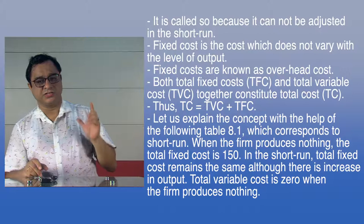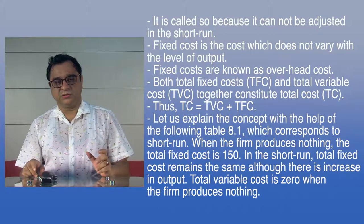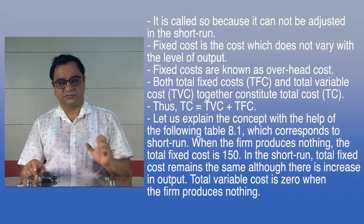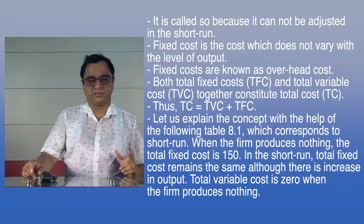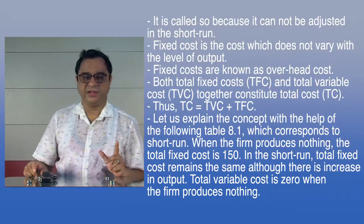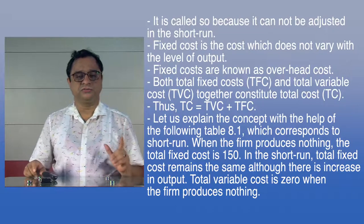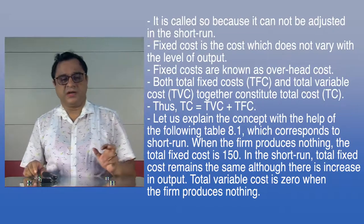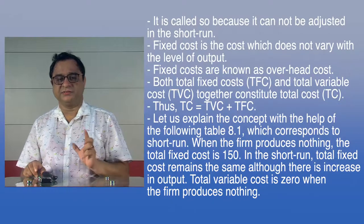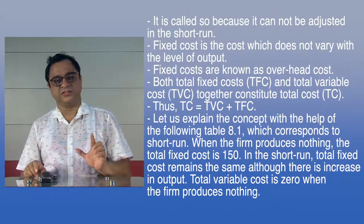Fixed cost is the cost which does not vary with the level of output. The fixed costs are also known as overhead cost. Both total fixed cost (TFC) and total variable cost (TVC) together constitute total cost (TC). Thus, TC is equal to TVC plus TFC — that is, total cost equals total variable cost plus total fixed cost.